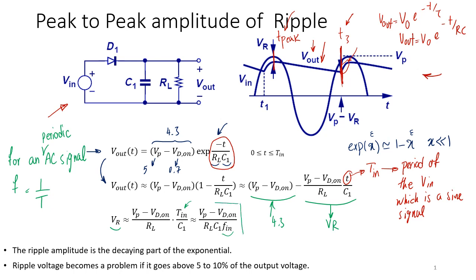The ripple clearly depends on VP minus Vd_on, but more importantly it depends on how big R is, how big C is, and how high the frequency is. To make the ripple smaller, I need to make the resistor bigger. If the resistor is really large, the current drawn is smaller — since V equals IR and the voltage across the capacitor is that 4.3. When current goes down, the discharge rate of the capacitor goes down, and therefore I have less ripple.